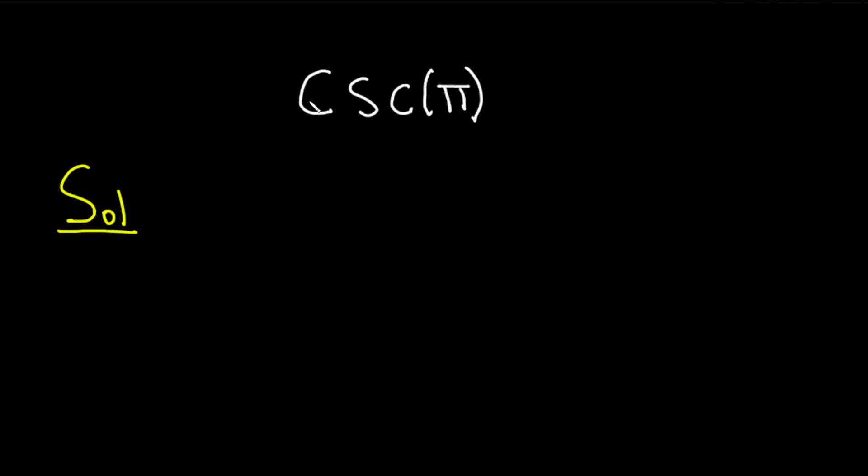So the first thing you should know is that the cosecant of x is equal to 1 divided by the sine of x.